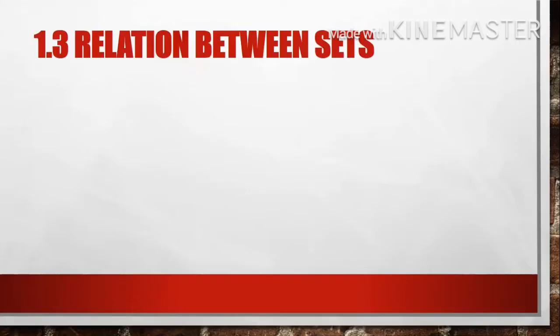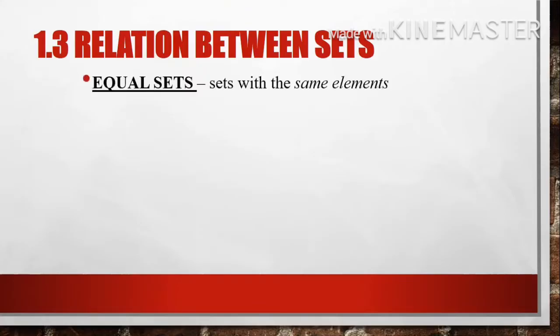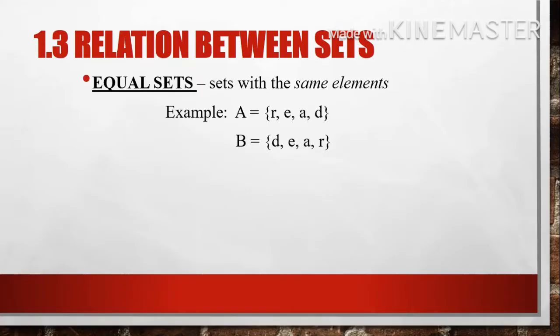Let's now proceed to the relations between sets. First is equal sets — sets with the same elements. Example: set A whose elements are R, E, A, and D, and set B whose elements are D, E, A, and R. As you can see, in equal sets, the sets have the same exact elements regardless of order.